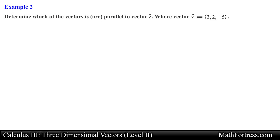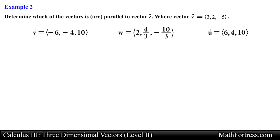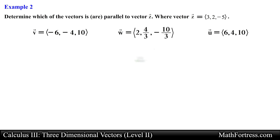Let's move along to the next example. Determine which of the vectors is or are parallel to vector z, where vector z equals (3, 2, -5). Recall that two vectors are parallel if one vector is a constant multiple of the second vector. For this problem we need to find or show that there exists a scalar that generates vector z when multiplied by the vectors shown below.